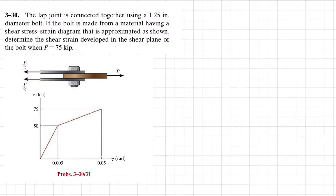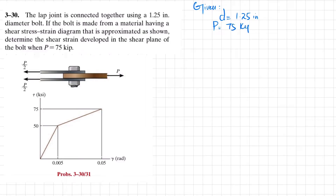Let's write the given data first. Given: the diameter of the bolt is equal to 1.25 inches, the shear load P is given as 75 kips, and what we have to find is the shear strain gamma that is developed in the shear plane of the bolt.